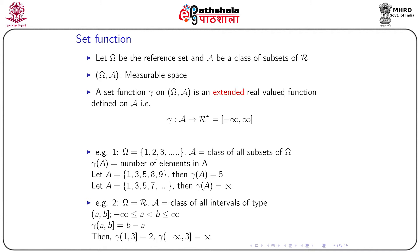Now consider the second example. Suppose the reference set omega is the real line and the class consists of all intervals of the type (A, B] — left side open, right side closed — with the assumption that A is less than B, and both can take minus infinity as well as plus infinity. We define the set function gamma(A, B) as B minus A, measuring the length. So gamma(1, 3) is 3 minus 1, which is 2. If one element is minus or plus infinity, the set function will be infinity.